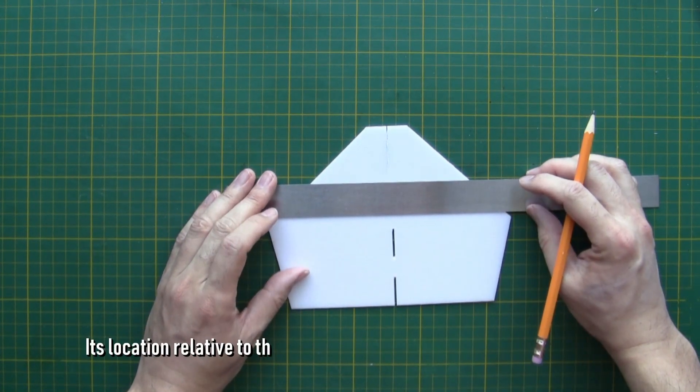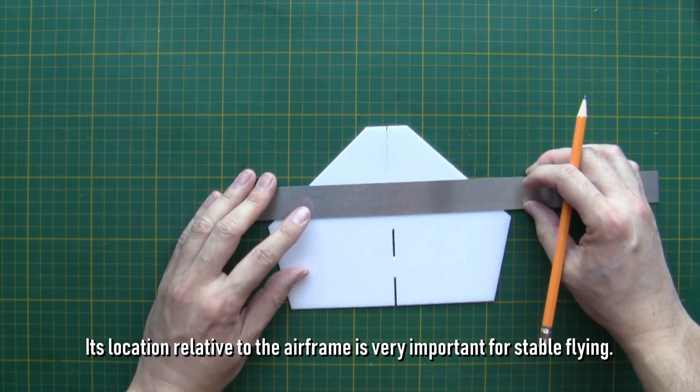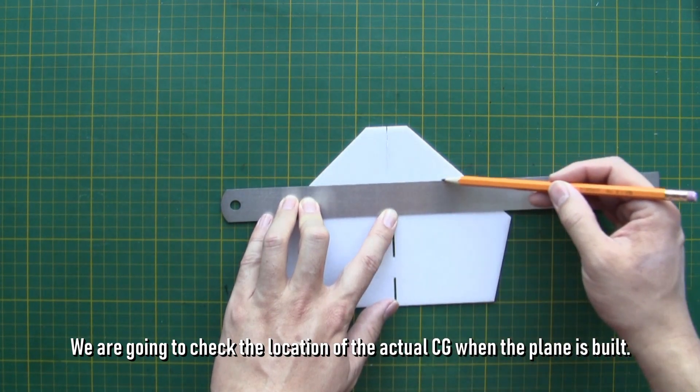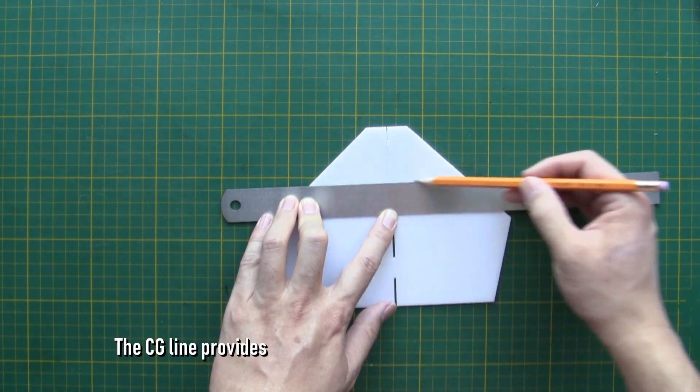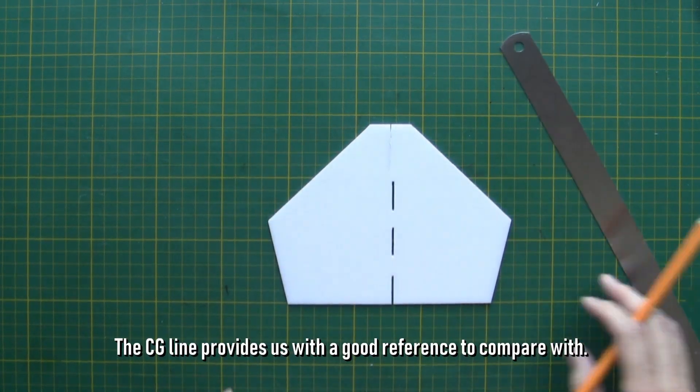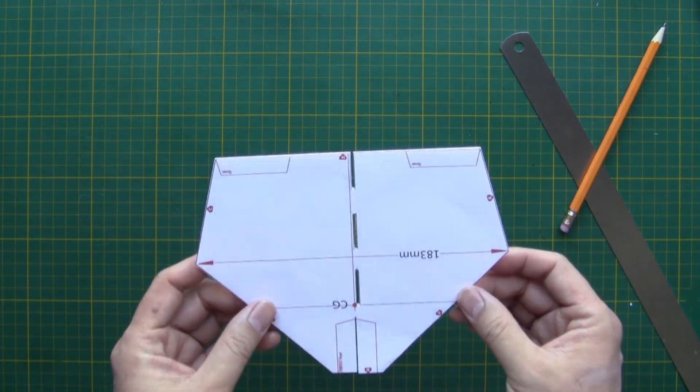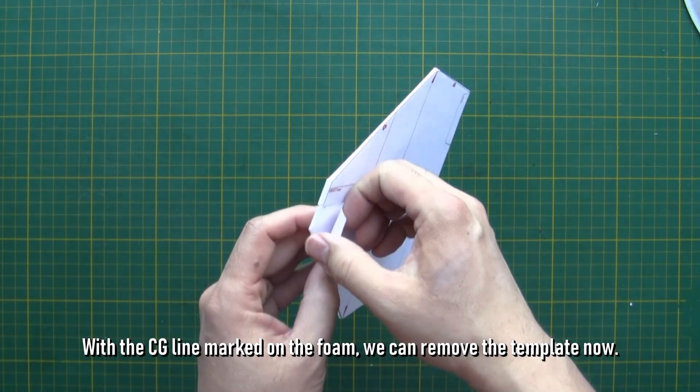CG stands for center of gravity. Its location relative to the airframe is very important for stable flying. We are going to check the location of the actual CG when the plane is built. The CG line provides us with a good reference to compare with. With the CG line marked on the foam, we can remove the template now.